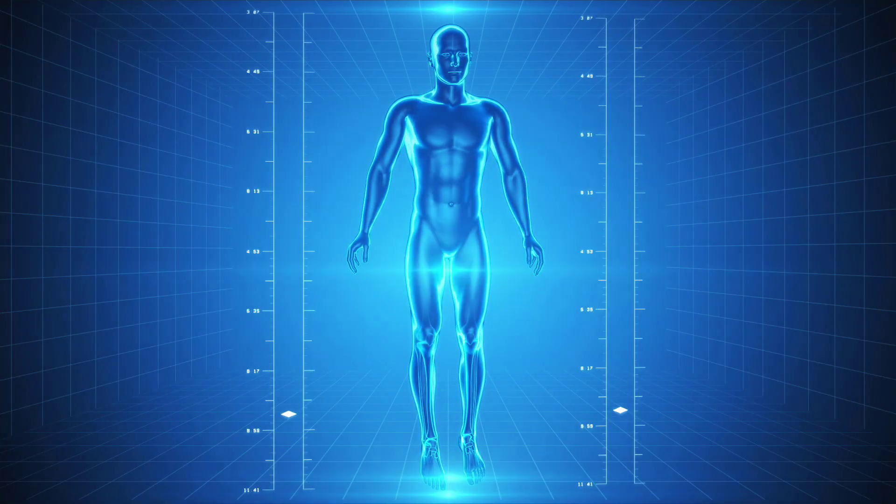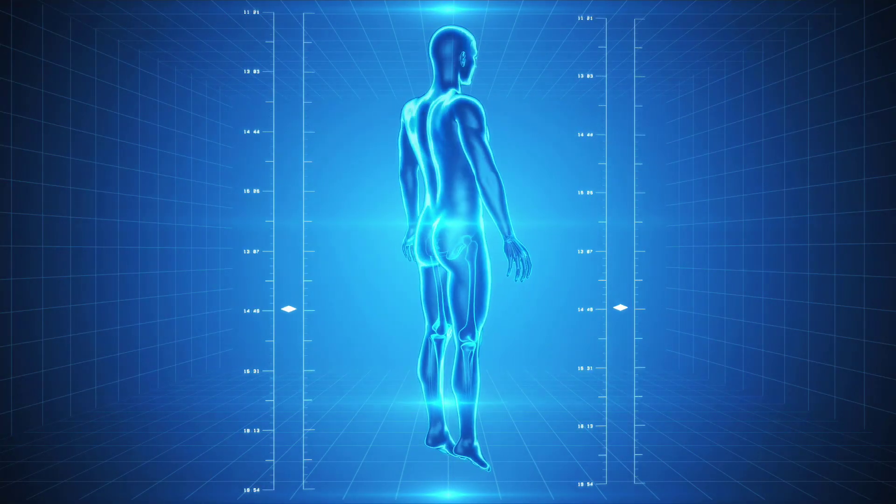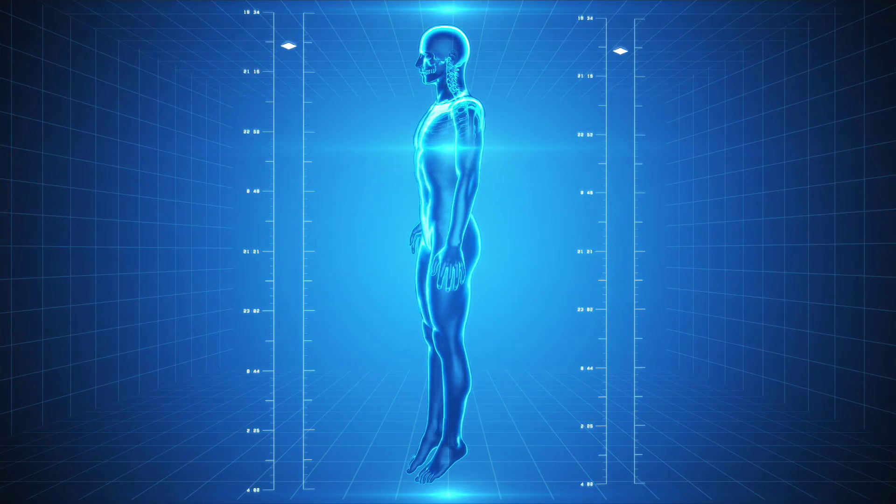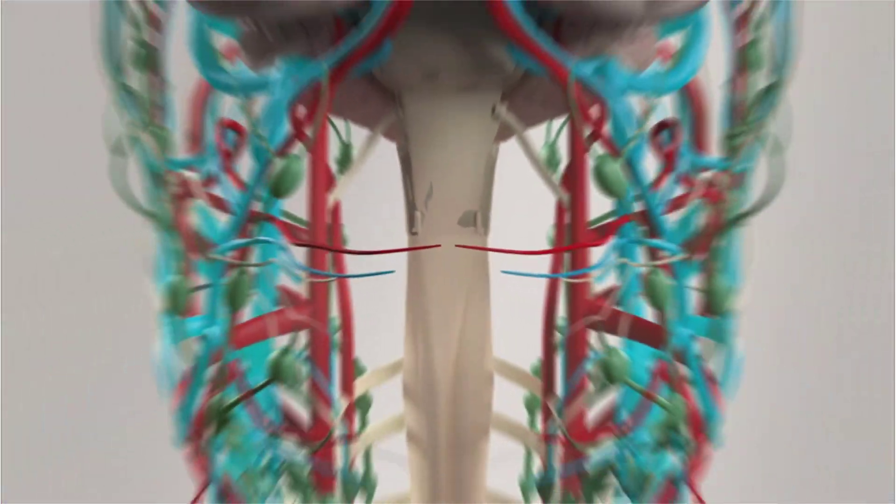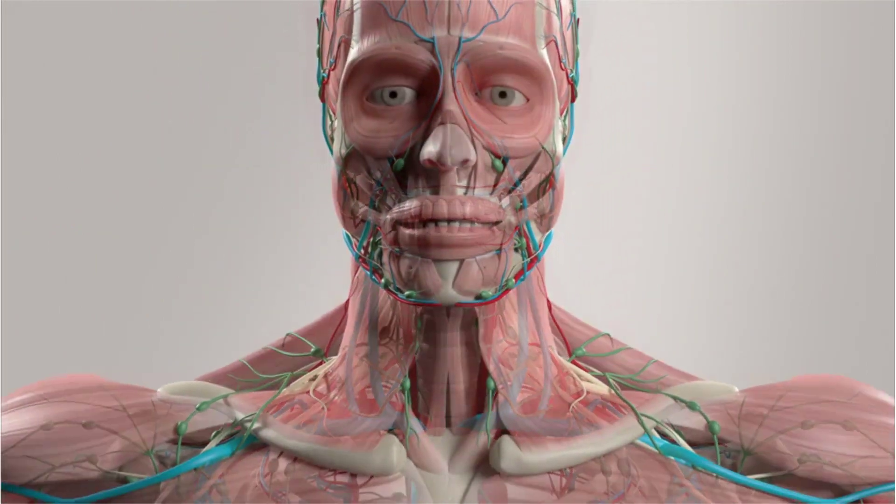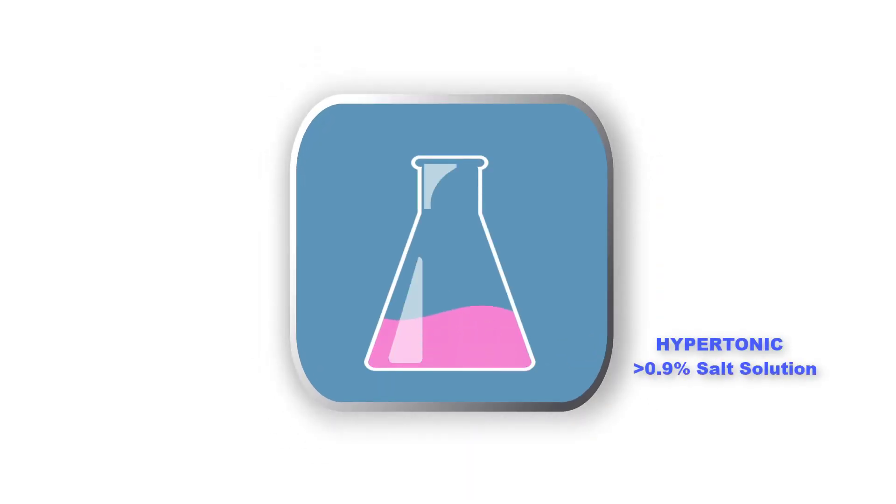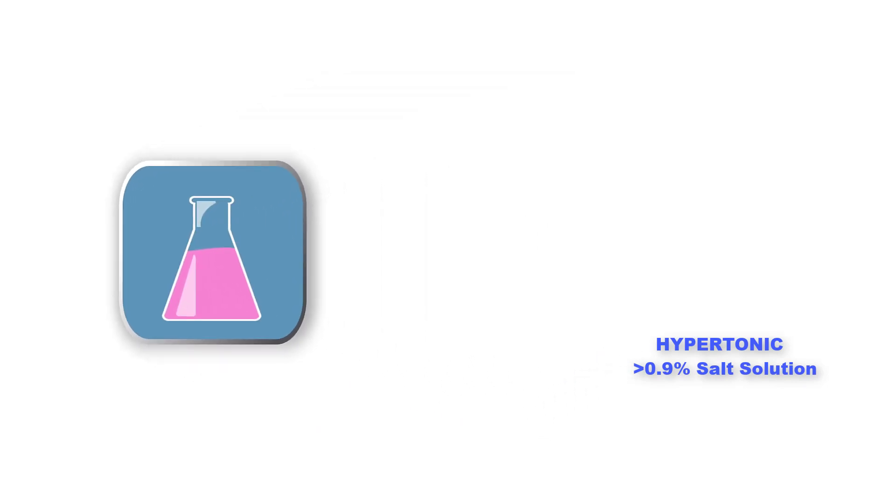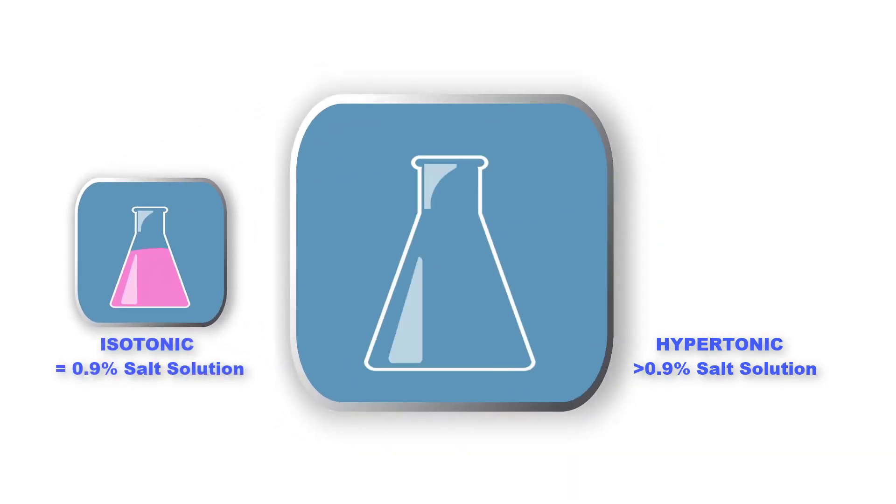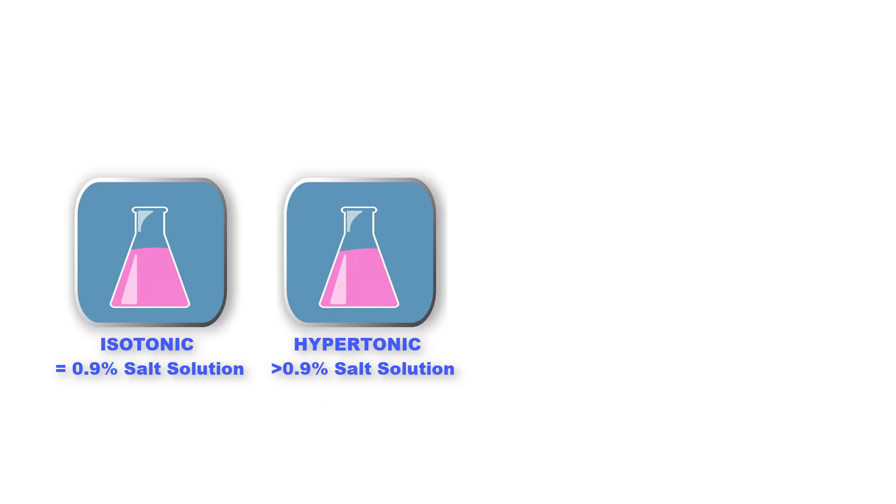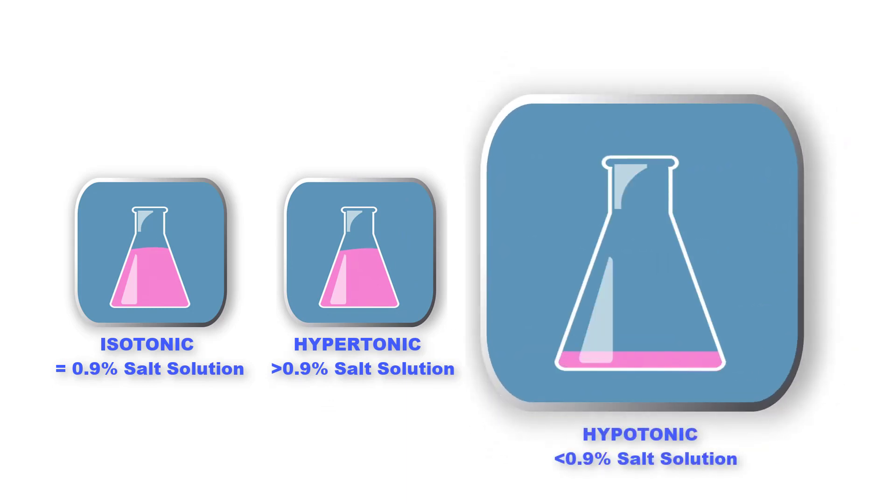So, what is considered isotonic, hypertonic, or hypotonic in the human body? A normal saline solution has a concentration that is similar to tears, blood, and other bodily fluids. This is about 0.9% saline. It is also considered an isotonic solution. An isotonic solution would be a solution with a salt concentration that is equal to 0.9%. A hypertonic solution would be a solution having a salt concentration above 0.9%. And a hypotonic solution would be a solution with a salt concentration below 0.9%.